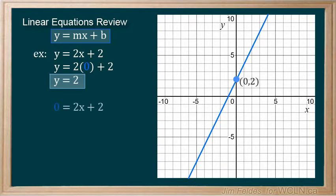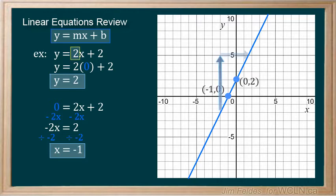And when y is zero, we can solve for the x-intercept. We get negative 1 on our graph. A positive 2m tells us our line's slope rises up and to the right two times faster than it runs.